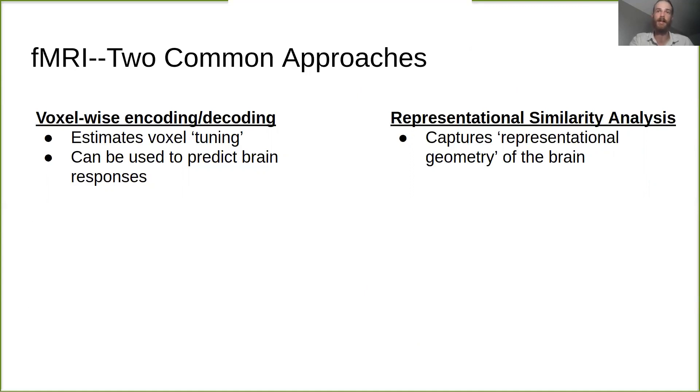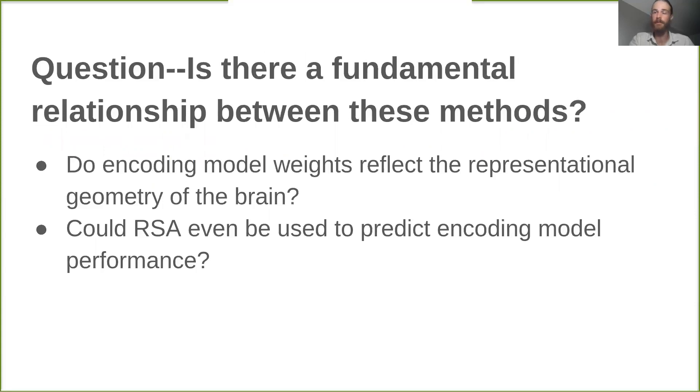So this raises the question, is there a fundamental relationship between these two methods? Do encoding model weights reflect the representational geometry of the brain? And could RSA be used to predict encoding model performance?